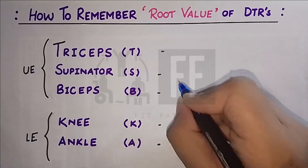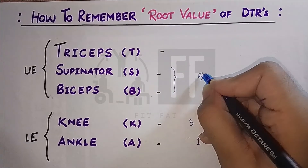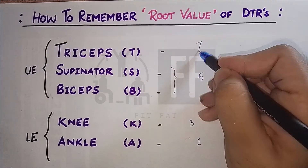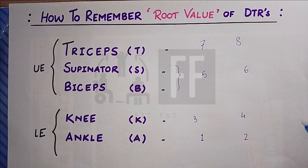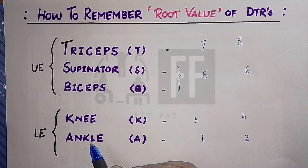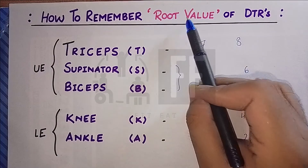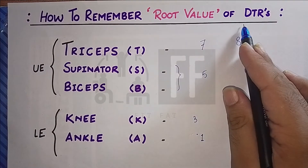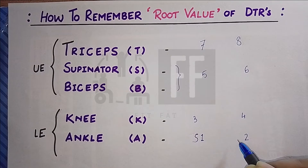Starting from the ankle, we will write one and two; then for the knee, three and four; similarly for biceps and supinator, five and six; and for triceps, seven and eight. Now we have put the numerical values. It's time to put the spinal segment. Since the ankle is at the bottom, its root value will also start from the last available spinal segment.